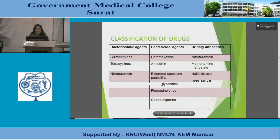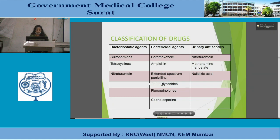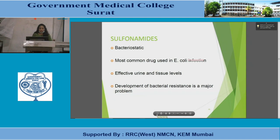Classification of drugs: bacteriostatic agents include sulfonamides, tetracycline, and nitrofurantoin. Bactericidal agents include cotrimoxazole, ampicillin, extended-spectrum penicillins, aminoglycosides, fluoroquinolones, and cephalosporins. Urinary antiseptics include nitrofurantoin, methenamine mandelate, and nalidixic acid.